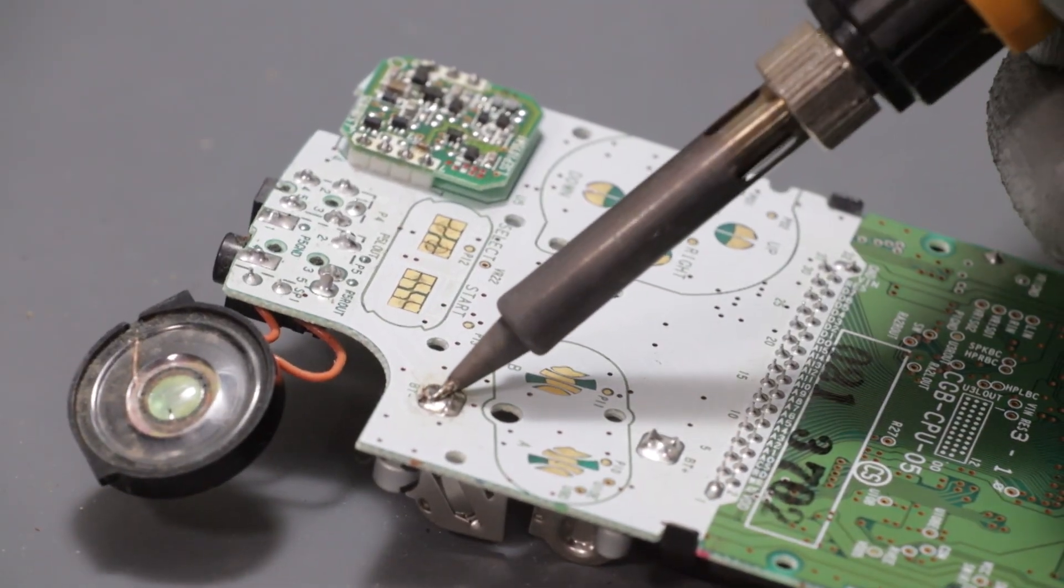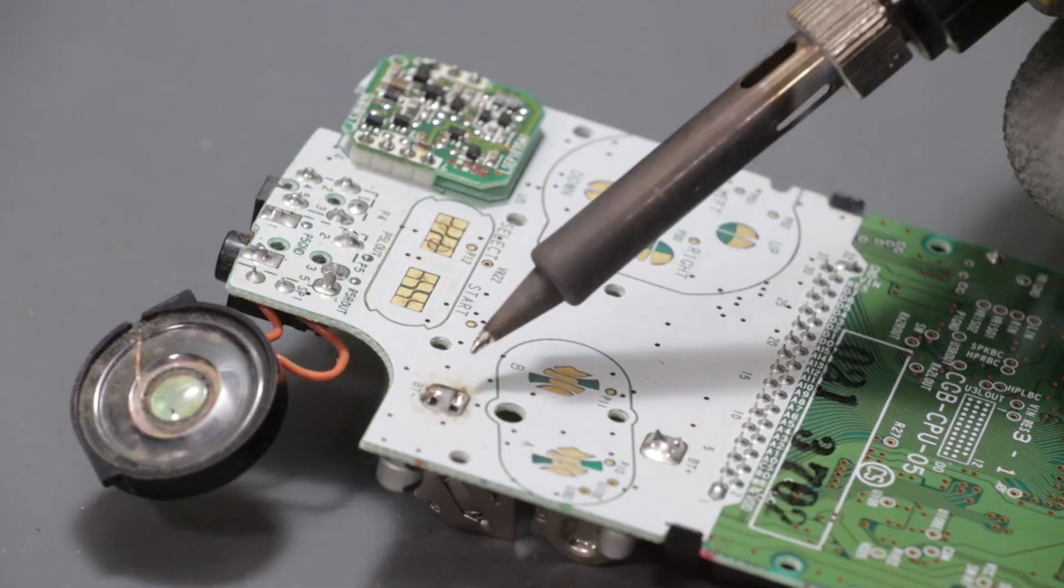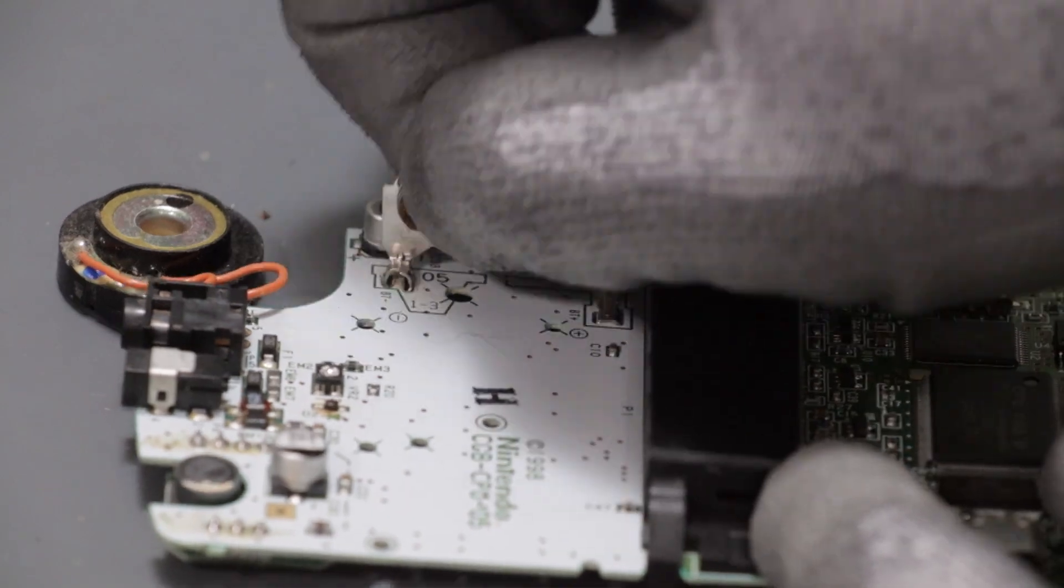Applying my soldering iron and using my solder sucker to take out all the solder from the pad. Now I can rock it back and forth until it's free.